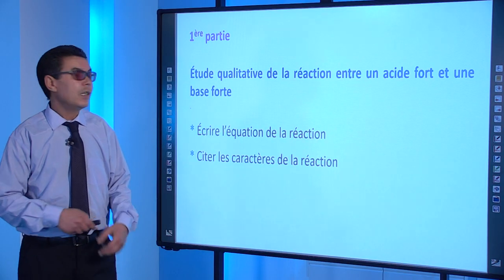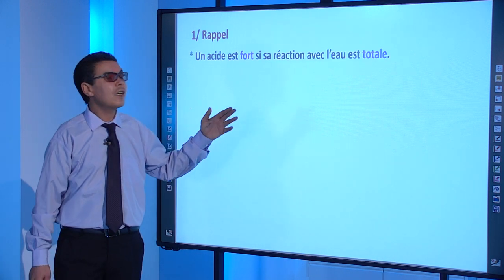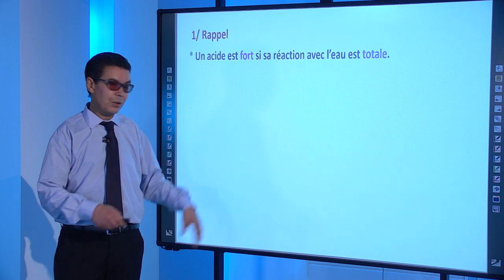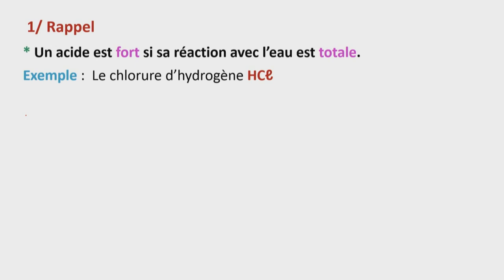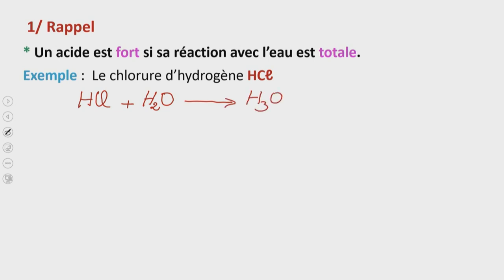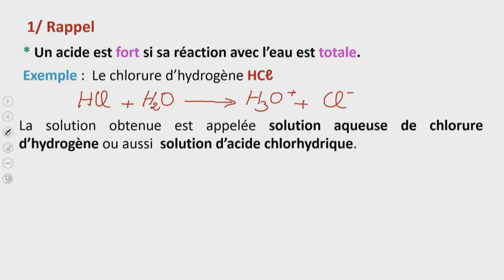Rappelons-nous d'abord qu'un acide est fort si sa réaction avec l'eau est totale. Exemple : le chlorure d'hydrogène de formule chimique HCl. Son équation de réaction d'ionisation dans l'eau s'écrit : HCl + H₂O → H₃O⁺ + Cl⁻. La solution obtenue est appelée solution aqueuse de chlorure d'hydrogène, ou aussi solution d'acide chlorhydrique.